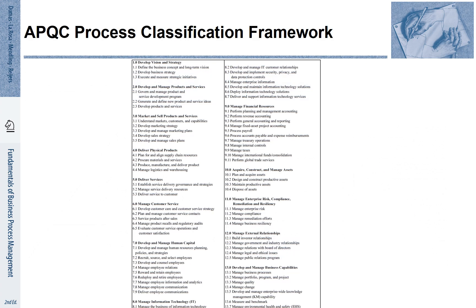How can we define such a complex structure as the process architecture? We can start from scratch, but we can also reuse existing recommendations and best practices for organizing them. This is very helpful for managing complexity. One potential starting point is the APQC Process Classification Framework.